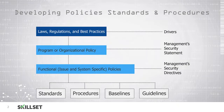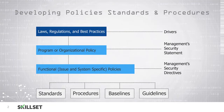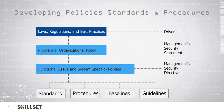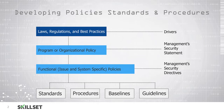We will then develop our organizational policy, which is our management's statement on security. Once we have this policy in place we can then begin working on our functional policies, which will focus on the issues affecting our business and our specific systems. These are the security directives provided by our management staff, and from these policies we will be able to develop standards, procedures, baselines, and guidelines.